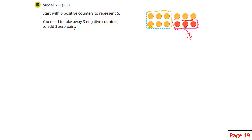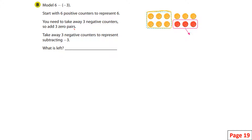This right here represents taking away those three negatives. As I erase all this stuff, what is left? We can see nine positives. So six positives take away three negatives is nine positives.